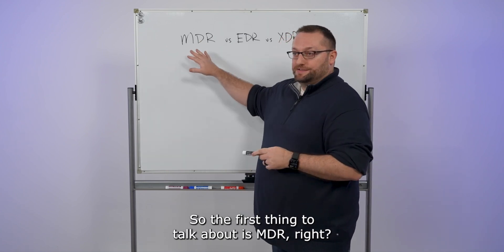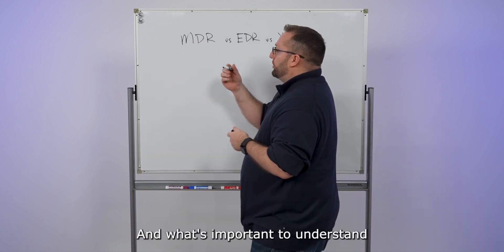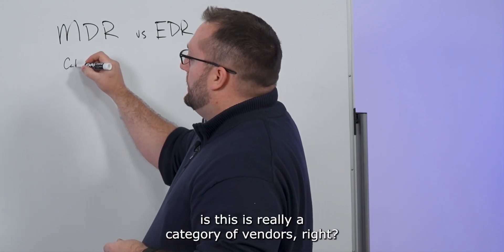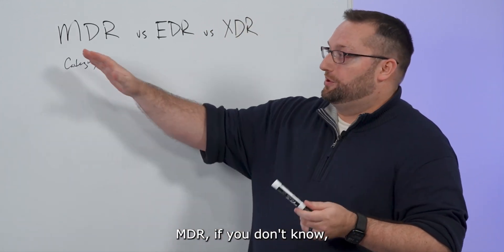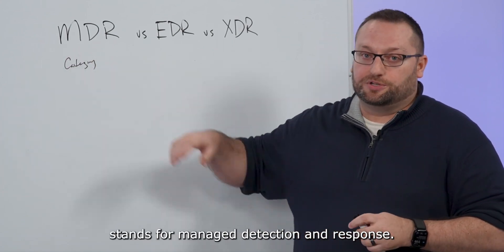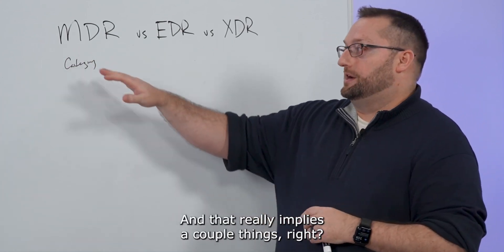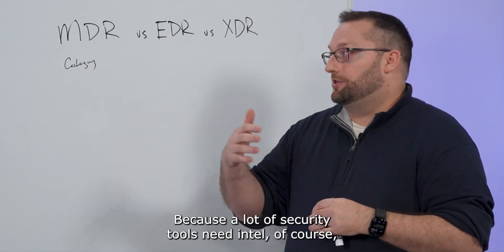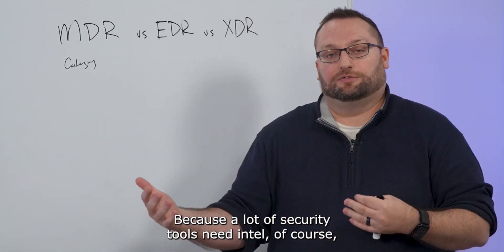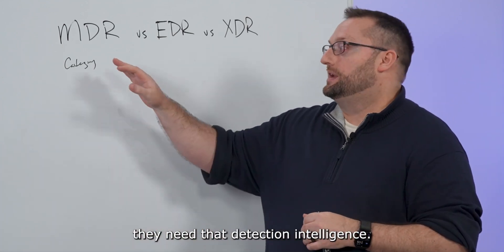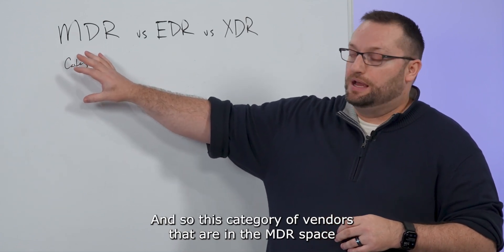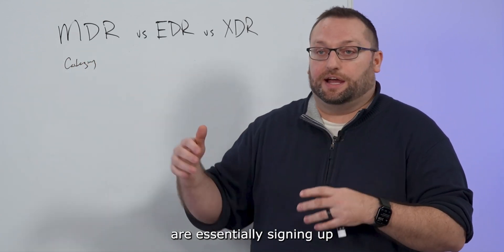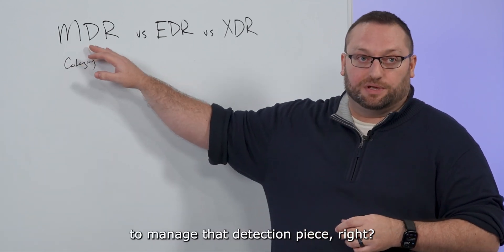So the first thing to talk about is MDR. And what's important to understand is this is really a category of vendors. MDR, if you don't know, stands for managed detection and response. And that really implies a couple things. Because a lot of security tools need intel, of course, they need that detection intelligence.